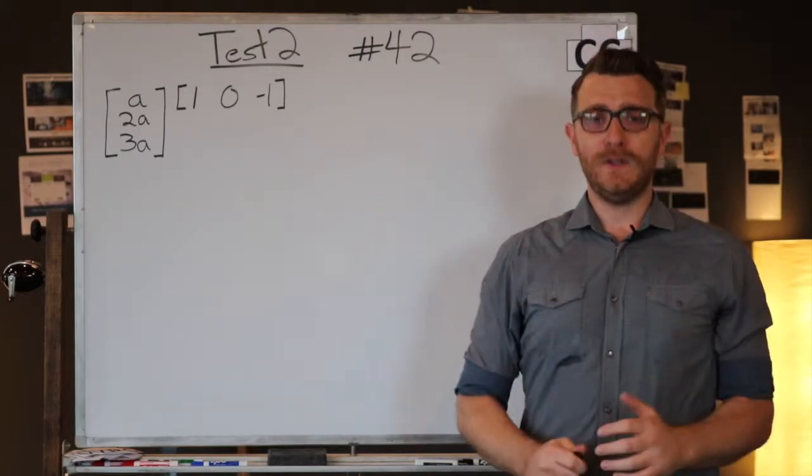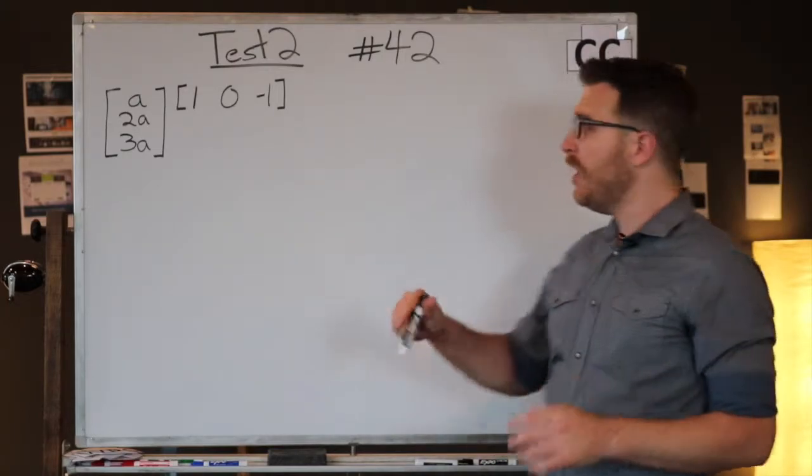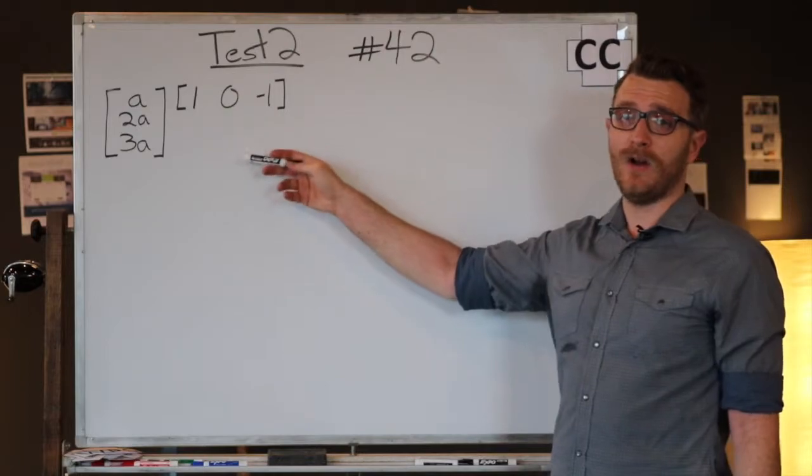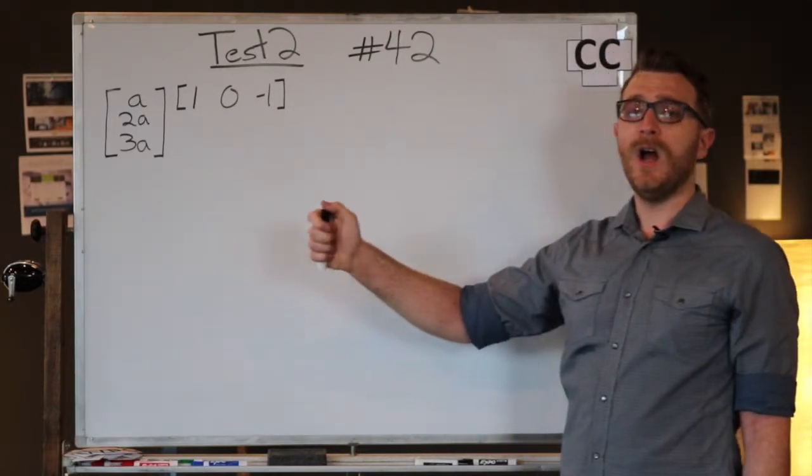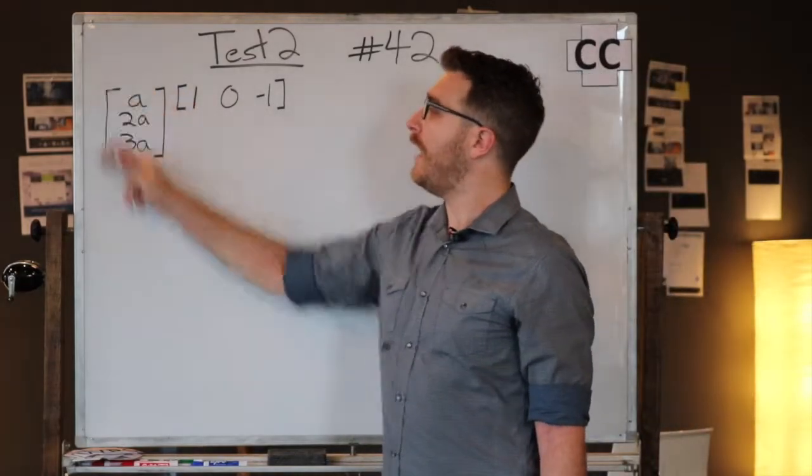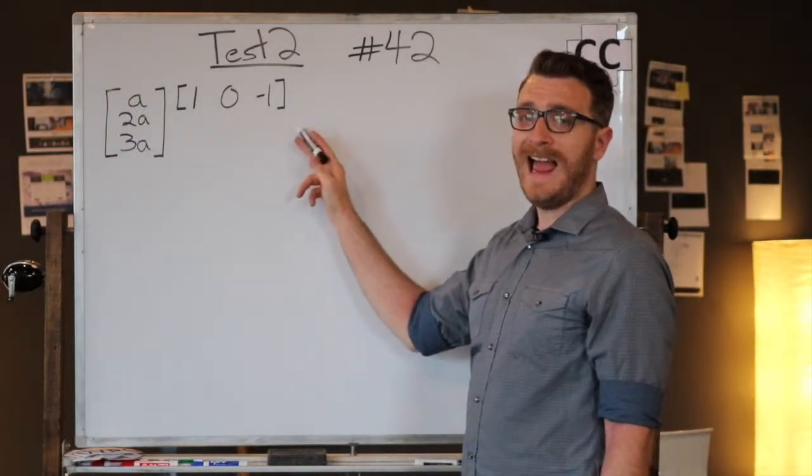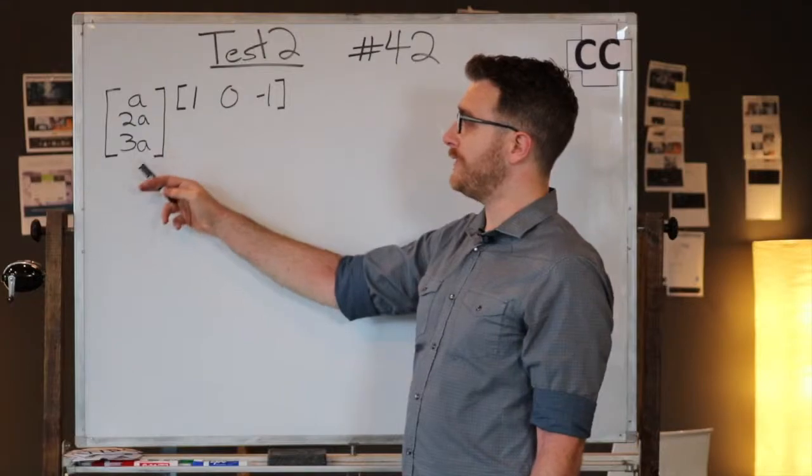But if you remember these rules as you've reviewed for the ACT, we know this is actually not that hard at all. We know that if we're going to find the product of two matrices, we need to multiply all of the terms in all the columns and rows and then add the sum of those together.